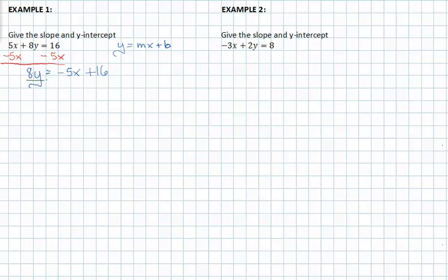We can isolate y by dividing both sides of our equation by 8. Notice that every term on the right side of the equation is also divided by 8, not just the first one.